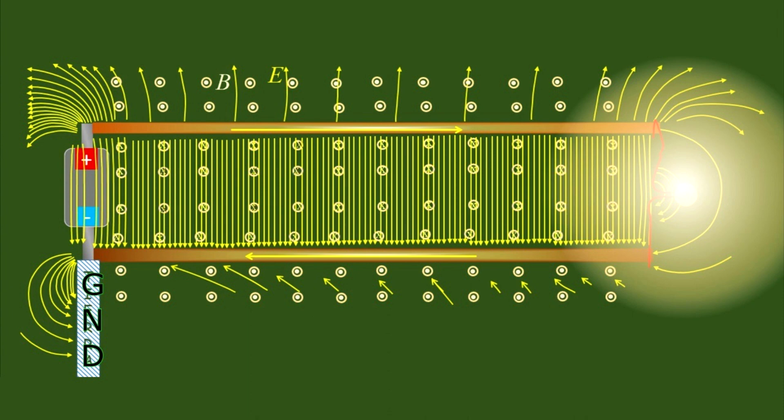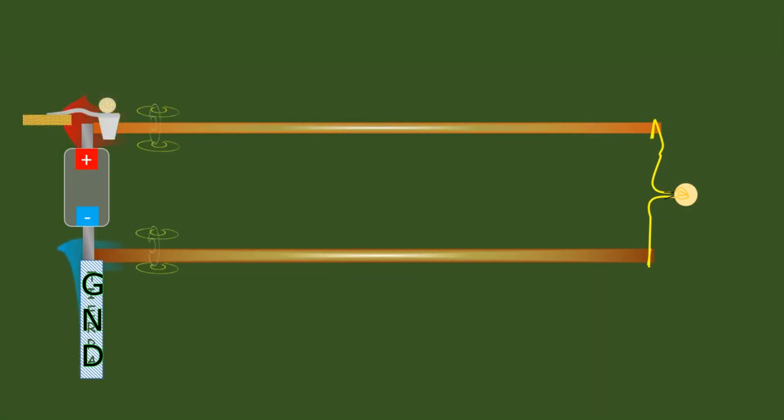Once the stationary state is reached, be it continuous or alternating for industrial use, the fields are quasi-stationary. There is no possibility of an electromagnetic wave being released.